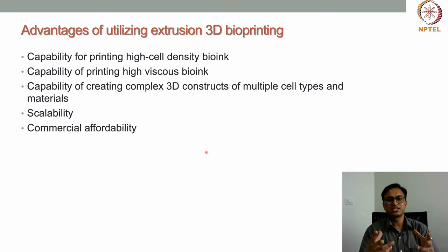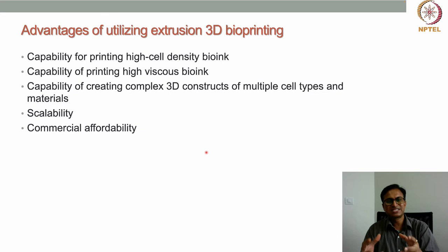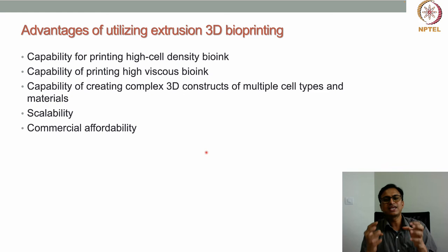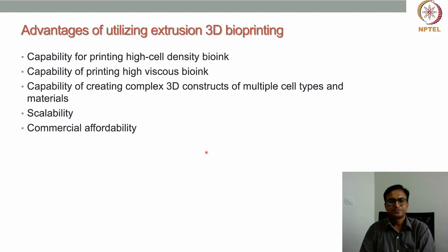Another advantage is the ability to print high-viscosity bioinks. For certain applications we may be trying to print a tissue of a few centimeters in size; the structure must be self-sustainable and stable. For that, we need to print with high-viscosity bioinks so that the stability of the structure is retained and it doesn't collapse. This bioprinting technology has the capability to print high-viscosity bioinks, which is another big advantage.